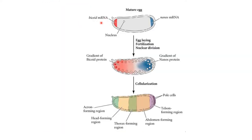In the mature egg after fertilization, bicoid is towards anterior and nanos is towards the posterior. This gradient forms and segmentation occurs. Anterior ends toward the mouth. After fertilization, each cell will divide into what will become head, thorax, abdomen, and tail side. Acron means face, telson means tail. After the acron there will be head, then thorax, then abdomen, then telson.